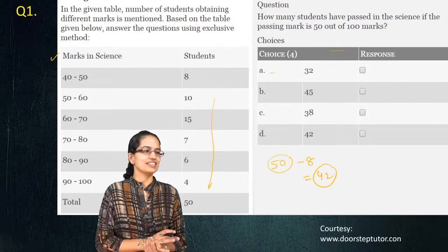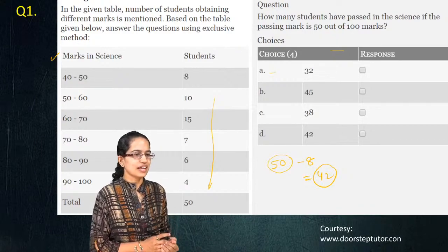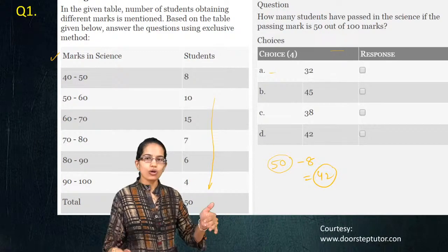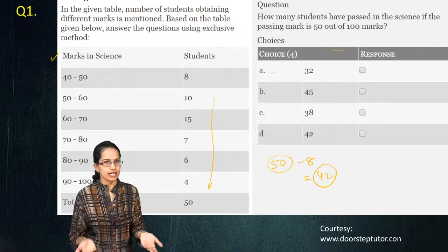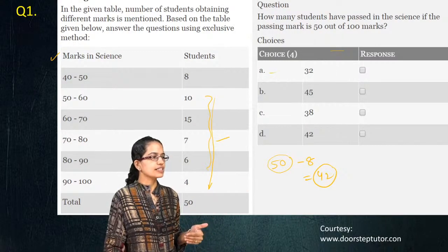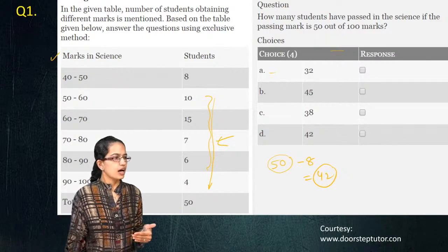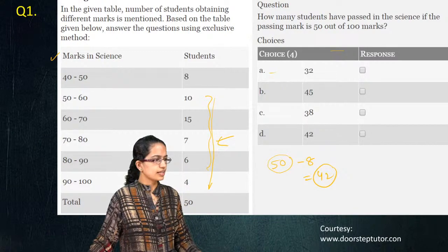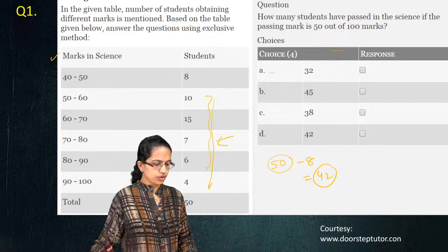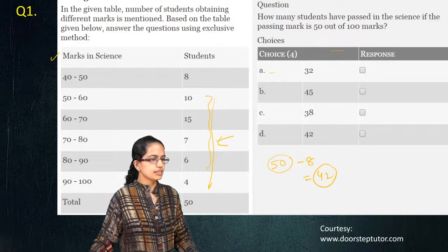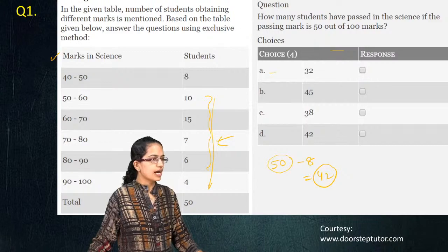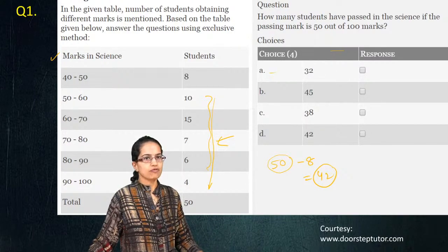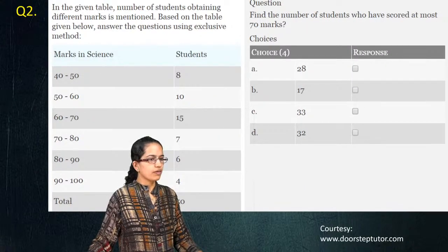There were a lot of wrong answers coming in as well. The key is to understand what the passing mark is — all those who secure 50 and above are the right answer, so marks from 50 to 100 would be counted here. Now the next question focuses on similar aspects, mainly understanding the basics of data interpretation in tabular form. I'll give you a moment to solve it.